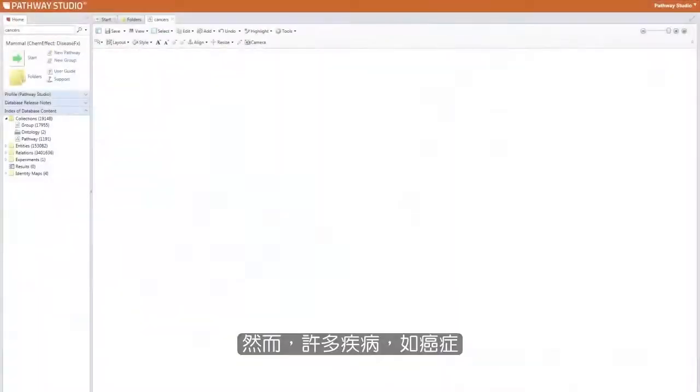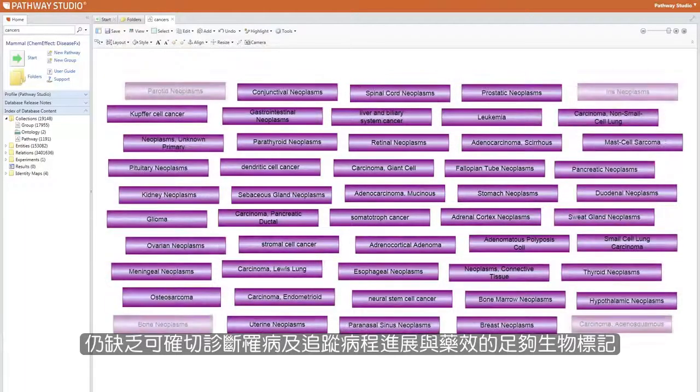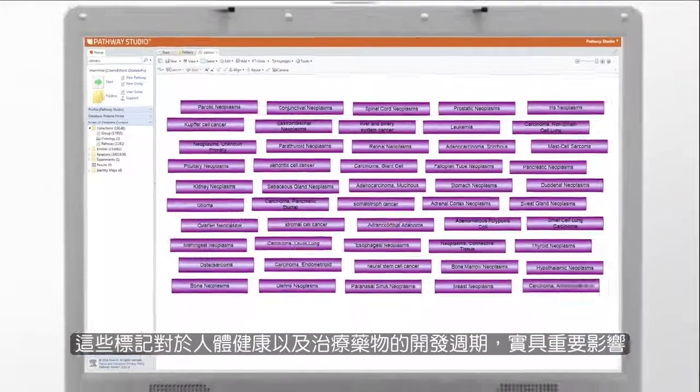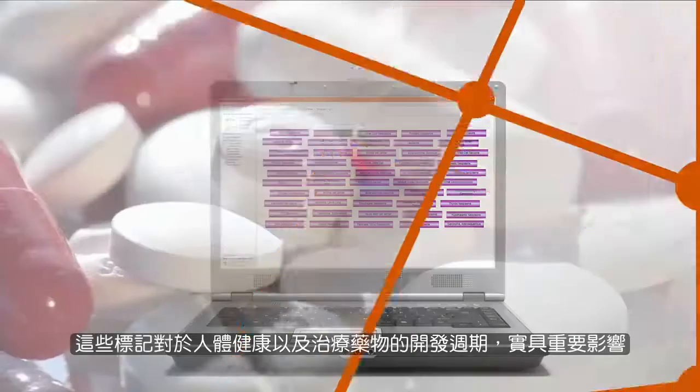However, many diseases such as cancers still lack sufficient biomarkers that could definitively diagnose disease and track disease progression and drug effectiveness. These markers could have a big impact on human health and on the pharmaceutical drug development cycle.